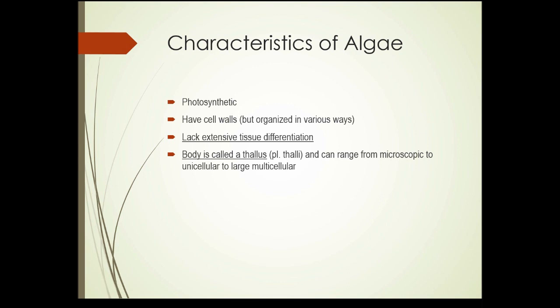The cell walls are organized in various ways depending on the groups that the algae belong to. They do lack extensive tissue differentiation — the tissues that make up their body are similar, whether it looks like a leaf, a stem, or a root. Other plants such as trees, shrubs, and common flowers have dramatically different structures for roots, stems, leaves, and flowers. The body of an algae is called a thallus, and they can range from microscopic and unicellular to large multicellular organisms, as we saw in that first slide with the kelp.